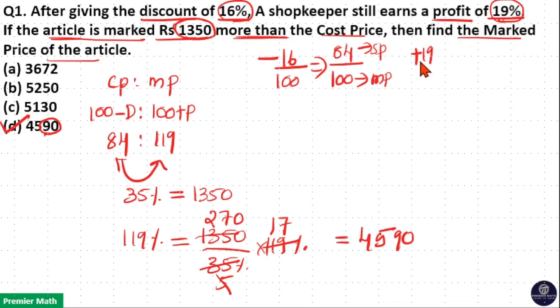Same way, profit means plus. So profit is 19% means plus 19 by 100. Now this means if 100 part is the cost price, then 100 plus 19, 119 part is the selling price.